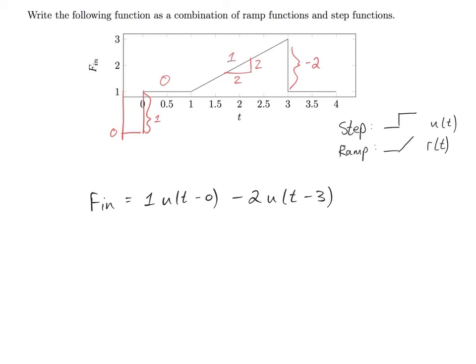The second change in slope has to explain the change from one to zero, meaning it is a change in slope of minus one. Let's write that down.